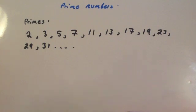24, not. 25 ends in 5. 26, even. 27, 3 times 9. 28, even. 29, only divisible by 1 and 29, so it's prime.